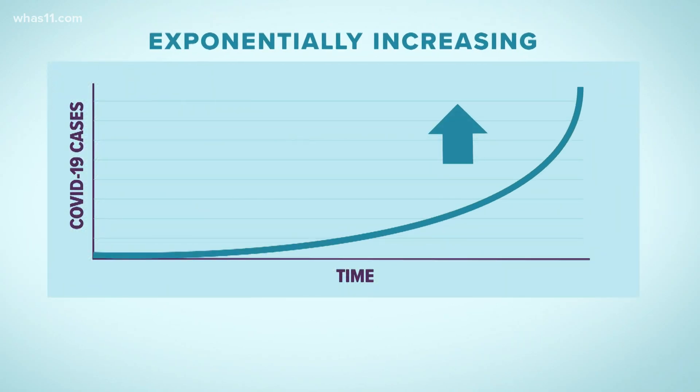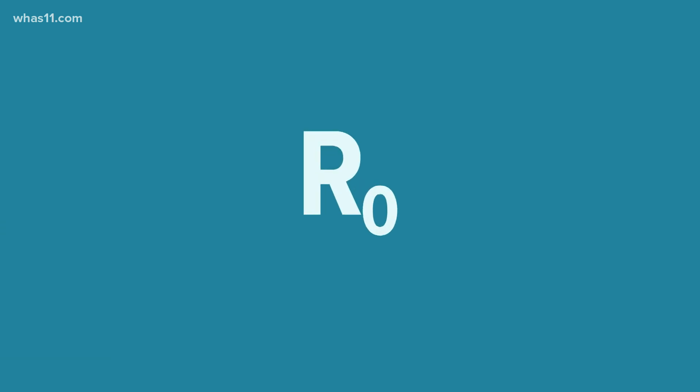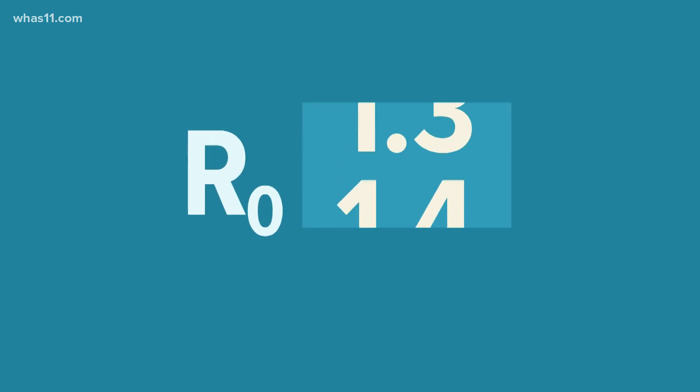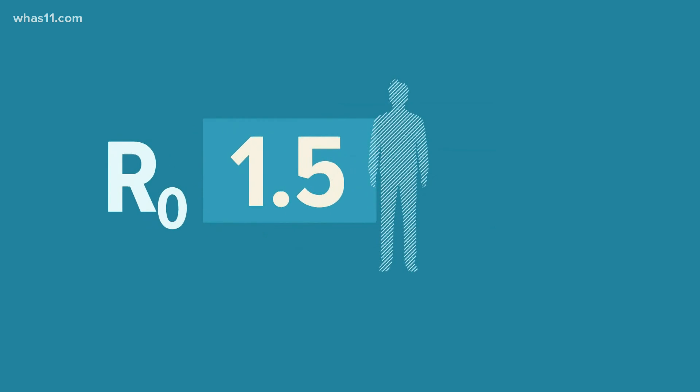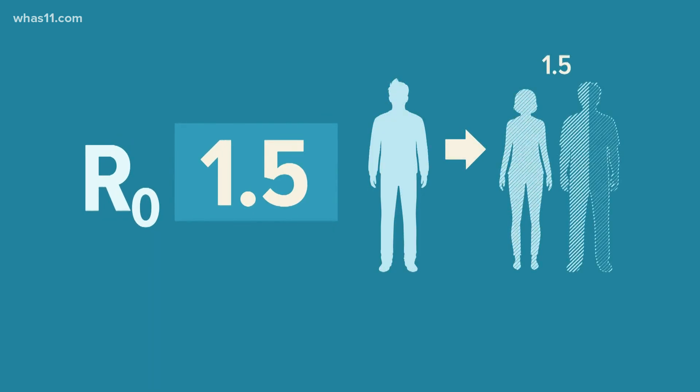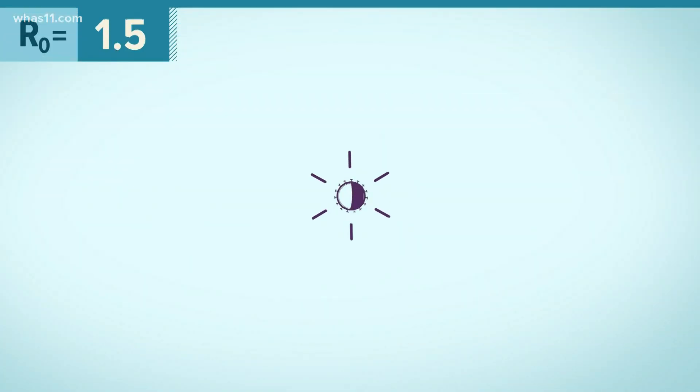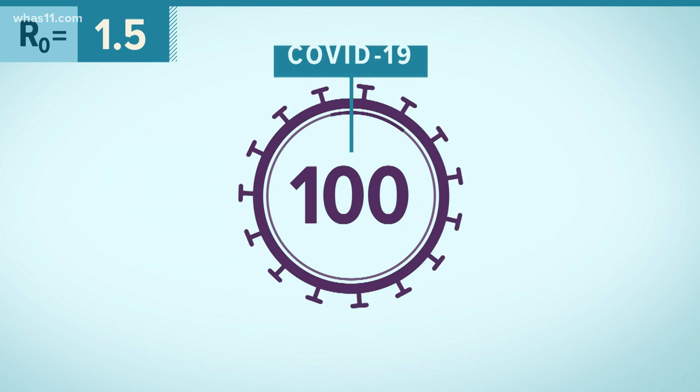So let's do the math. If the R-naught number is above one, like 1.5, that means each sick person is infecting one and a half other people. If you take a group of, say, 100 people who have all tested positive for COVID-19, those 100 people will infect 150 people.